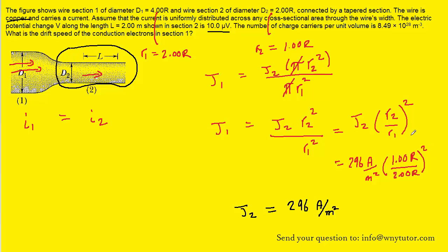Don't forget to square it. We can see that those capital R's will cancel out. So we'll have 296 multiplied by one half squared, and this gives us a value for the current density found in wire 1 to be 74 amps per meter squared. So this is the value of J1.